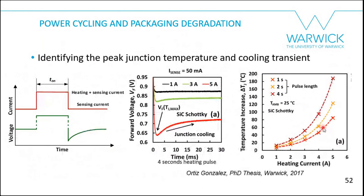TSEPs require calibration. For the IGBT and diode, it's the on-state voltage at low current — you measure on-state voltage at different temperatures and see how it reduces with temperature. For both the silicon carbide Schottky and silicon IGBT, the on-state voltage decreases with temperature, so you can use this as a temperature sensor. When you remove the heating current and apply only the sensing current, you can identify the junction temperature from your calibration curve.